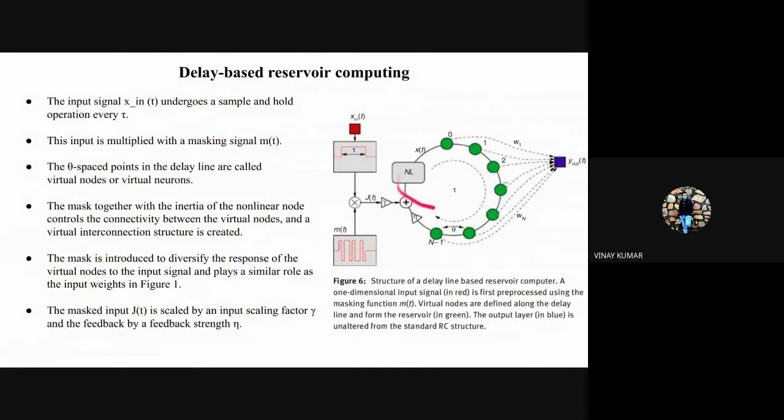In this figure, the input signal undergoes a sample and hold operation every tau. It is multiplied by a masking signal m(t), and this mask repeats every tau. Within one period it is a piecewise constant function with a fixed sequence of n values. The theta-spaced points in the delay line are called the virtual nodes.